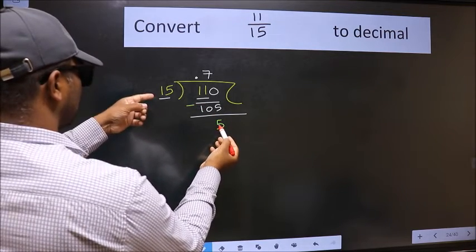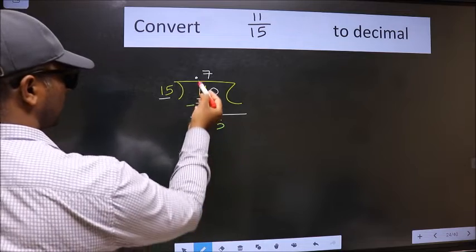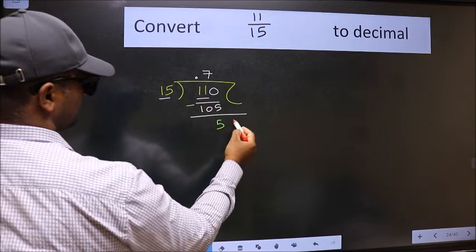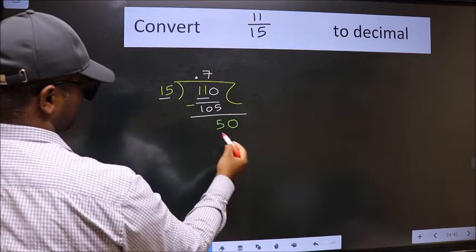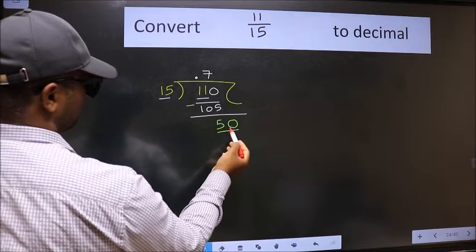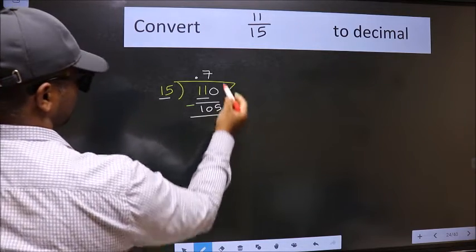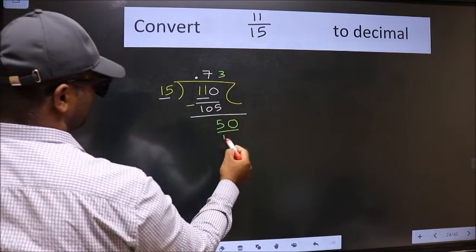5 is smaller than 15, and we already have the decimal, so directly take 0. So 50. A number close to 15 in the 15 table is 15 threes, 45.